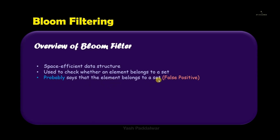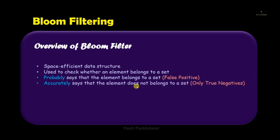The bloom filter will give you one of two outputs: either the element is present or it is not present. If the bloom filter gives you a positive output — that the element is present — there is no actual surety that the element truly belongs to the set. This means the bloom filter gives you only a probable answer when it gives a positive answer. It won't give you 100% certainty that the element is present.